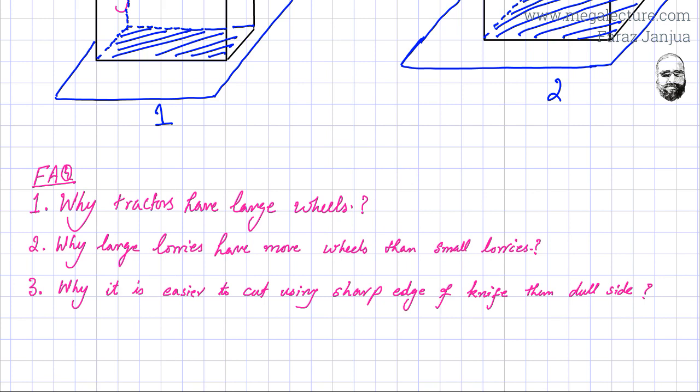Why do large lorries have more wheels than small lorries? And the answer is again the same. More wheels have more area. So what happens is the force is distributed among a larger area. Hence, less force is acting on a unit area. And with more wheels, they become less likely to sink into the soft ground, so they can easily move on the road.